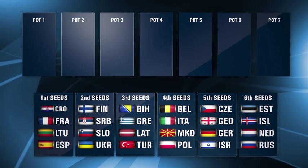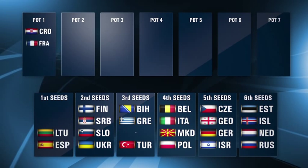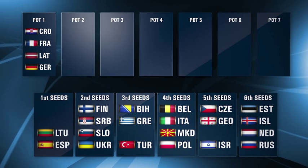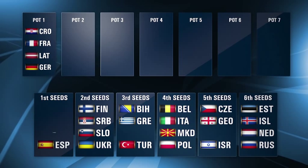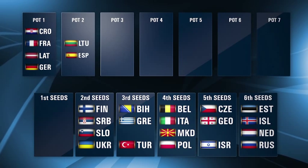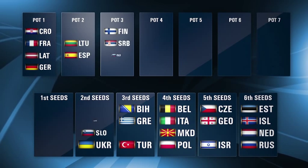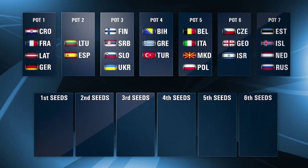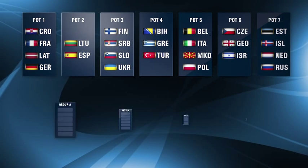Pot 1 contains the four host countries: Croatia, France, Latvia and Germany. Pot 2 contains the remaining first seeds, Pot 3 the second seeds and so on up to Pot 7.